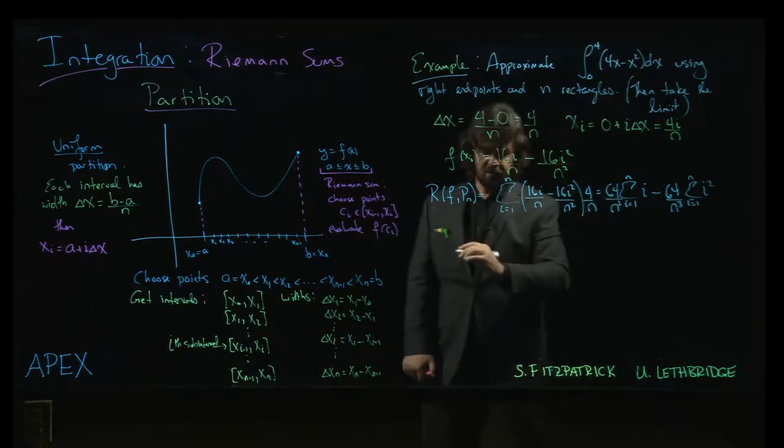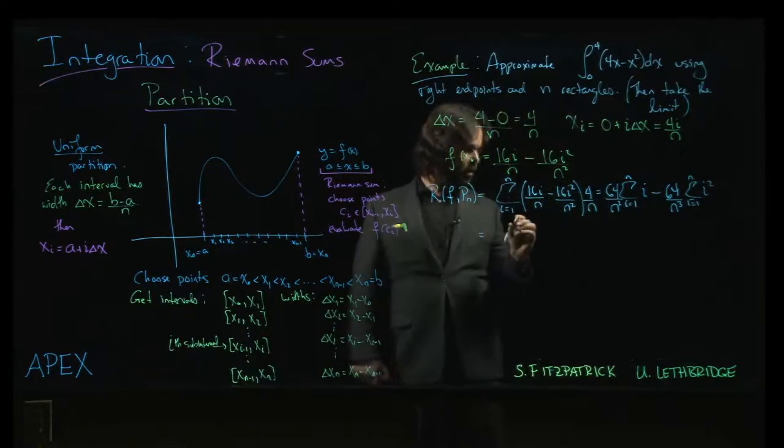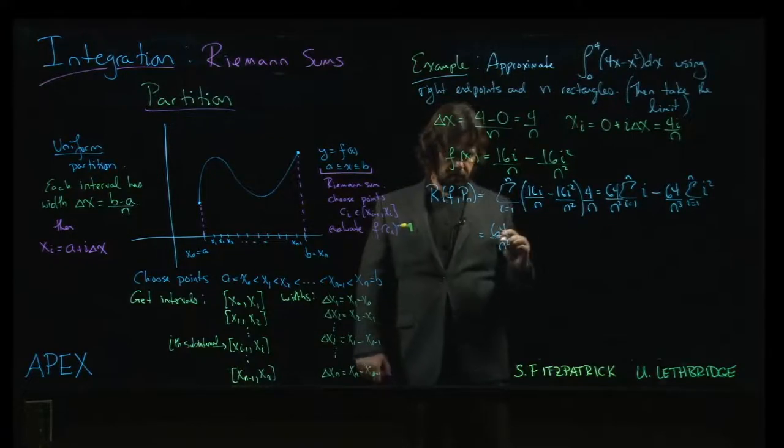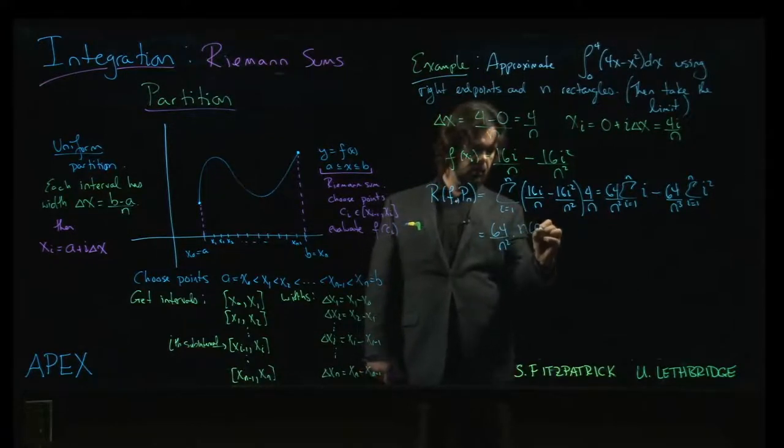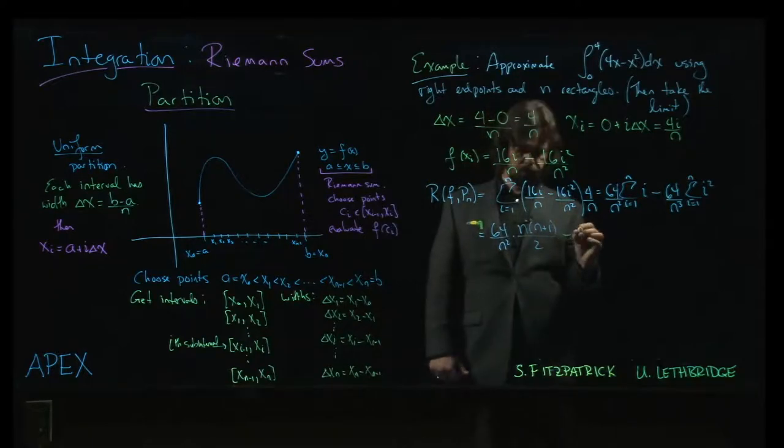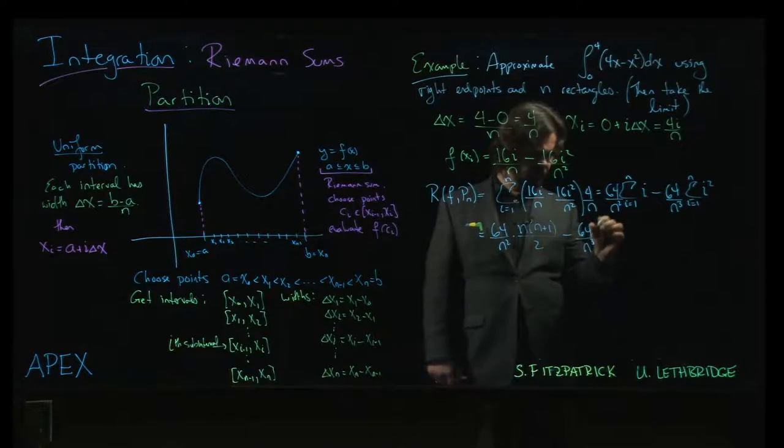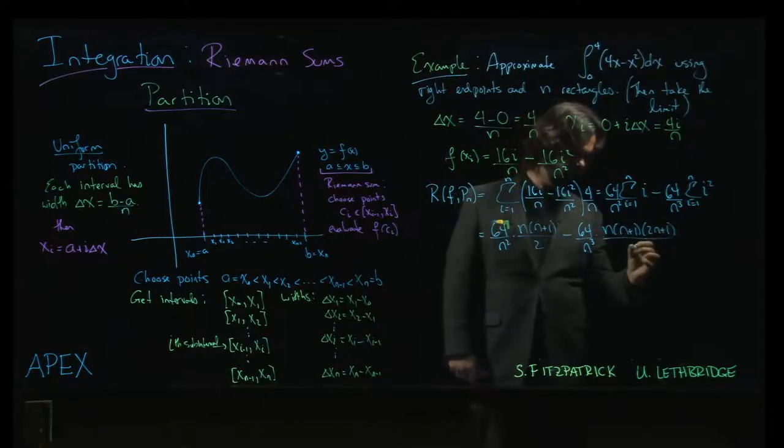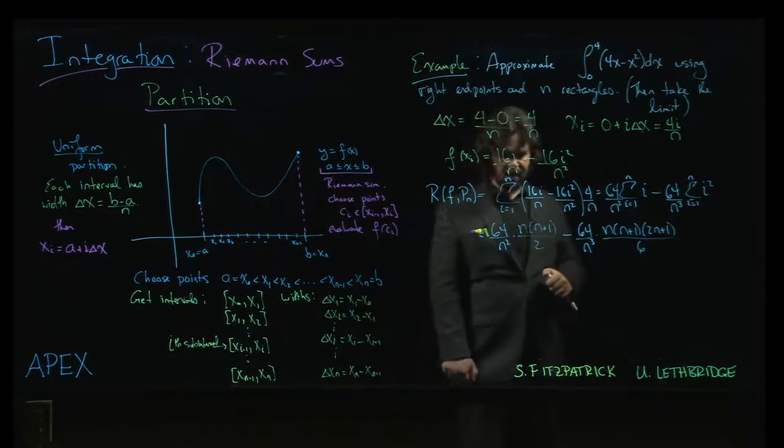Those same summation formulas coming up again. So this time, 64 over n squared times n times n plus 1 over 2. Think about like when we were plugging a thousand in, how complicated this felt. But now, it's actually not so bad. Somehow easier working with the formulas rather than the numbers.